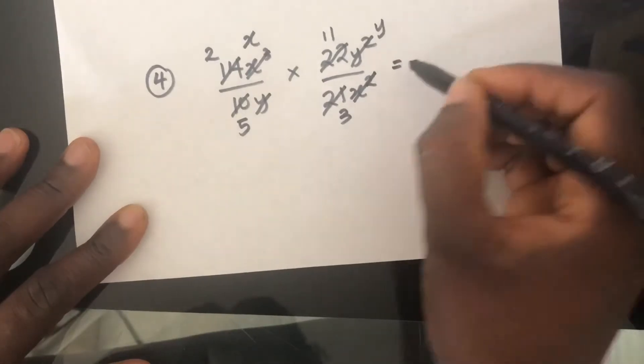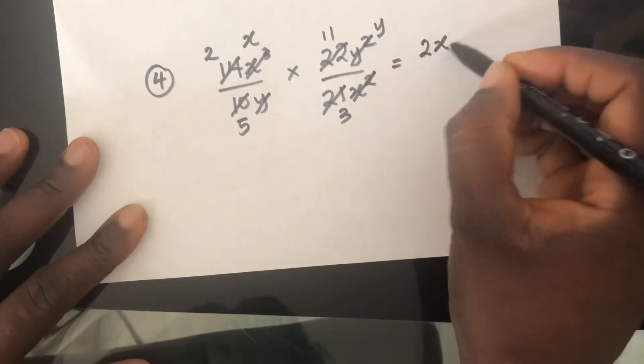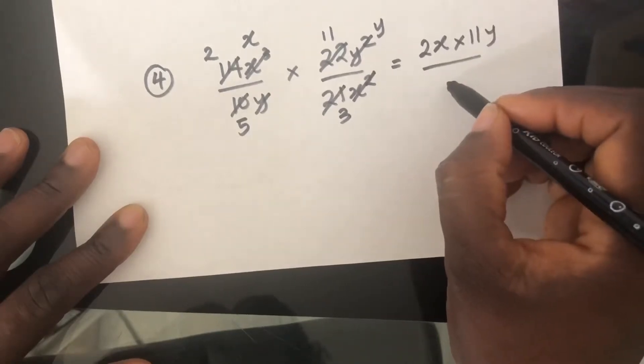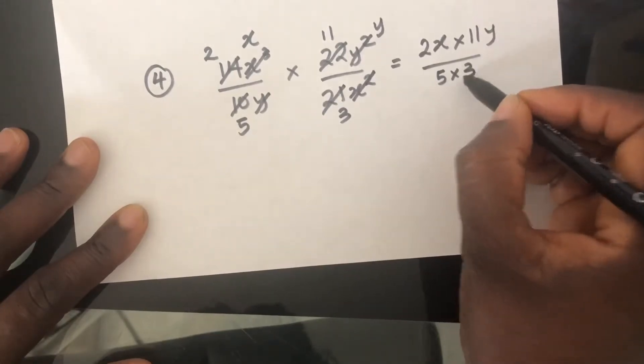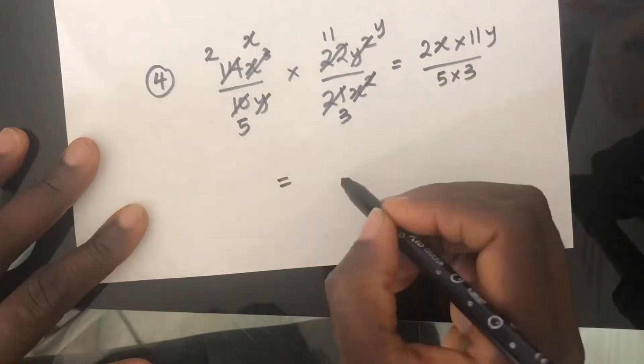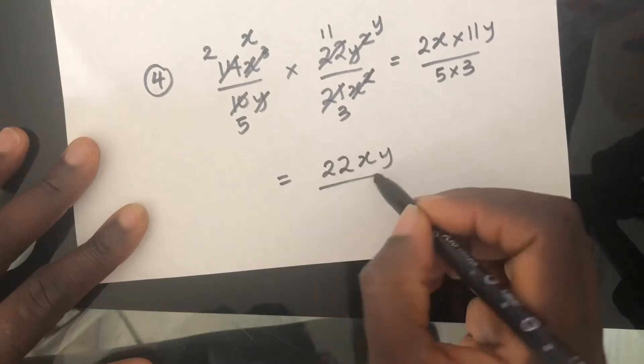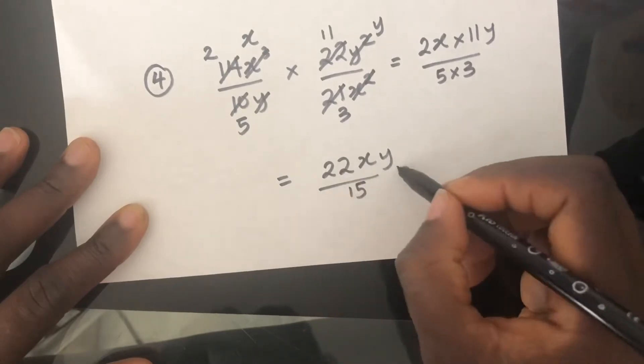So on the top, we would have 2X times 11Y over 5 times 3, which is going to give us 22XY over 15. And that's the answer.